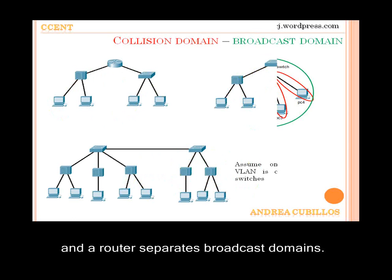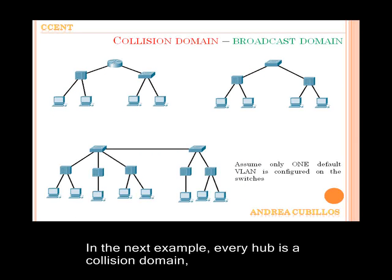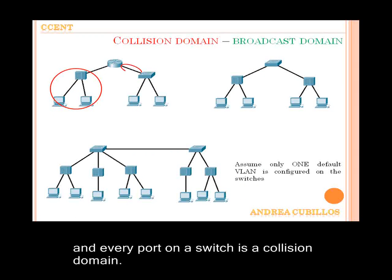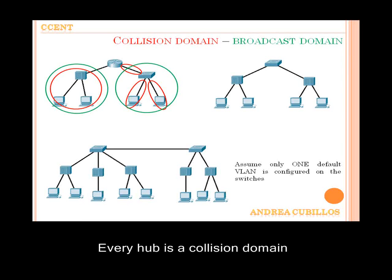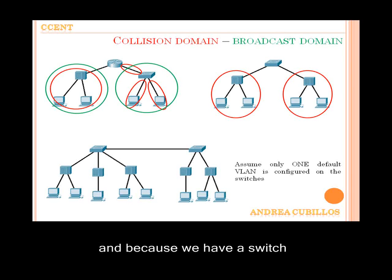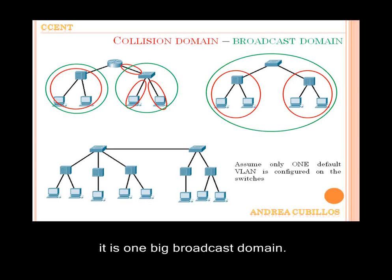In the next example, every hub is a collision domain and every port on a switch is a collision domain. A router separates broadcast domains. Every hub is a collision domain, and because we have a switch, it is one big broadcast domain.